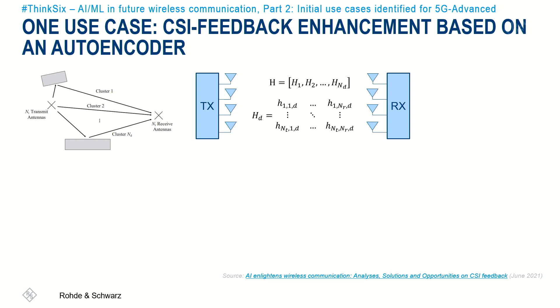The original idea to compress feedback for channel state information was already explored by several universities and research institutes in China as part of a challenge. A summary of this contest is given in a paper from June 2021. The problem description aligns with our earlier discussion: only limited channel feedback is provided based on an extraction from the complete channel state information. Providing full channel state feedback is an implementation challenge due to the difficulty of developing adequate compression and recovery mechanisms using traditional approaches.